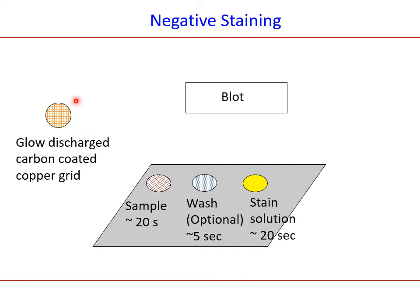Now let's discuss the methodology of negative staining. What we have is a glow-discharged carbon-coated copper grid. The concepts of carbon film, copper grid, and glow discharge were discussed earlier — those who want details can look at the presentation on EM grids and support films. A glow-discharged copper grid has its carbon coating's hydrophobic effect nullified, making it act like a magnet for biological molecules. This grid should be fresh and used immediately after glow discharging.